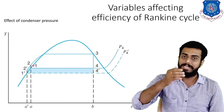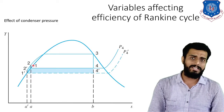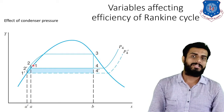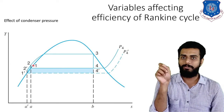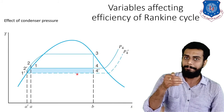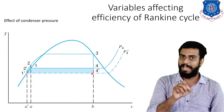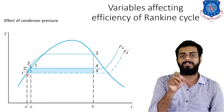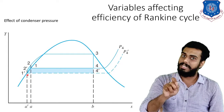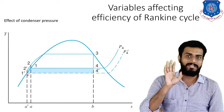If we decrease the condenser pressure, obviously the temperature will also decrease. Corresponding to the new lower pressure, the low pressure line will be below the 4-1 line. As you can see, the new line is drawn as a dotted line 4'-1', which is the representation of a decrease in condenser pressure.